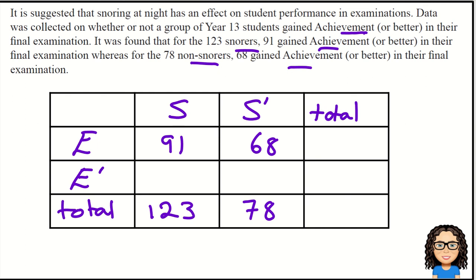Now I can work out what the other values on the table are. 123 minus 91 gives me 32, and 78 minus 68 gives me 10. Then I can add my rows: 159, 42, and 201. That's my first step—to collect the data.